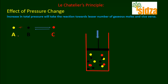Let's suppose reactant A is a gaseous molecule, B is also a gaseous species, and product C is also a gas. Looking at the number of gaseous molecules on the reactant side and the product side: we have two gaseous moles on the reactant side and one gaseous mole on the product side. So we have more gaseous particles on the reactant side and fewer on the product side.